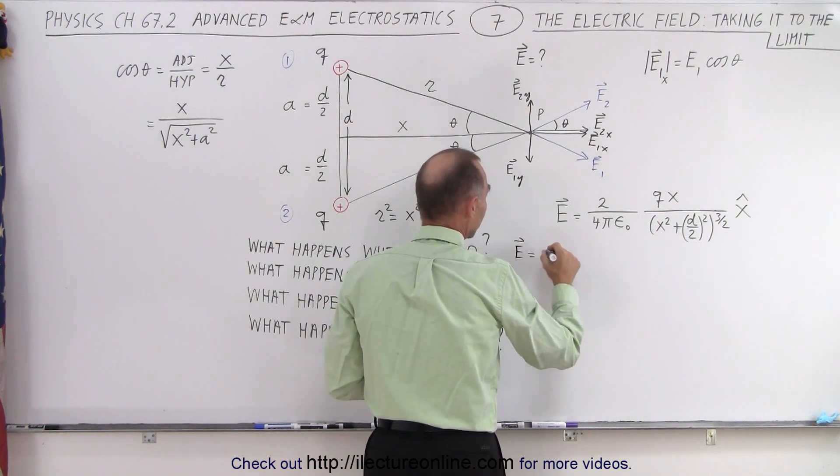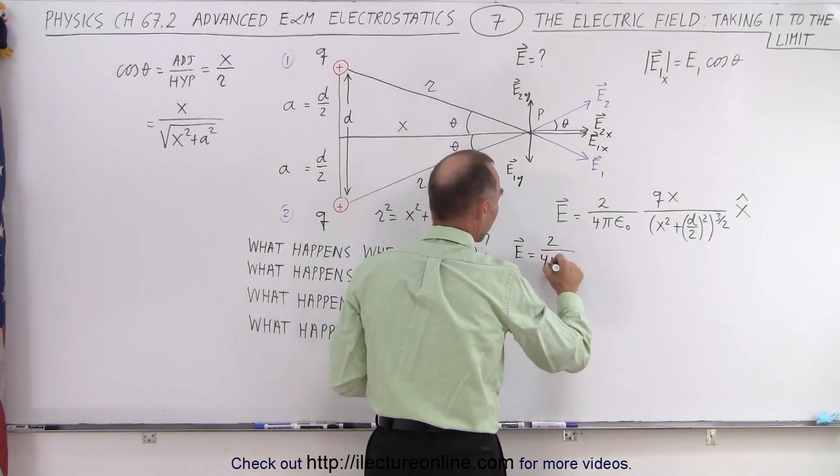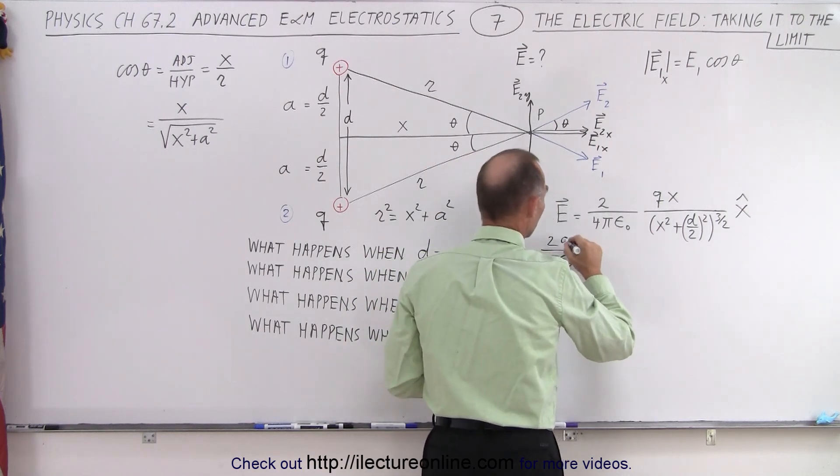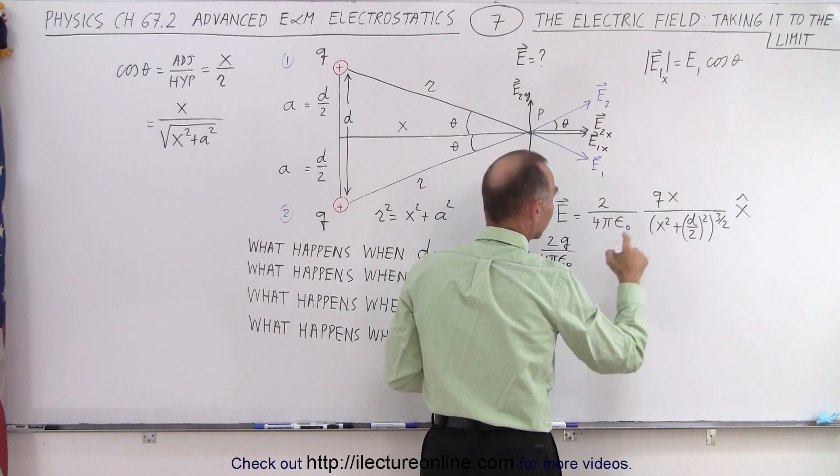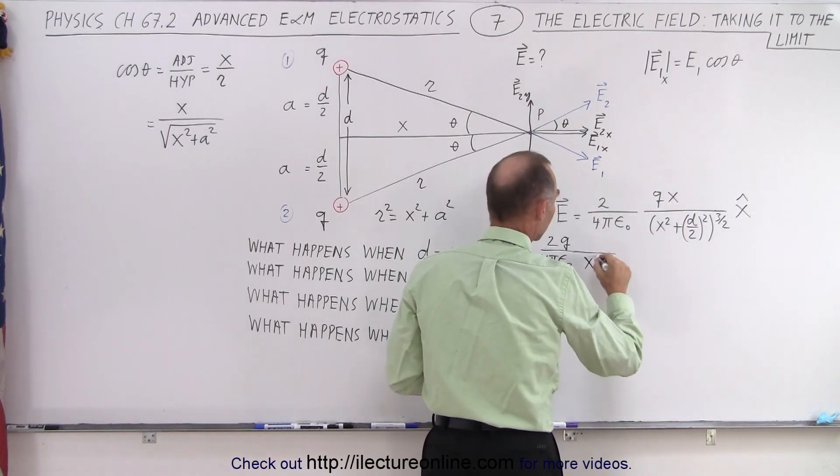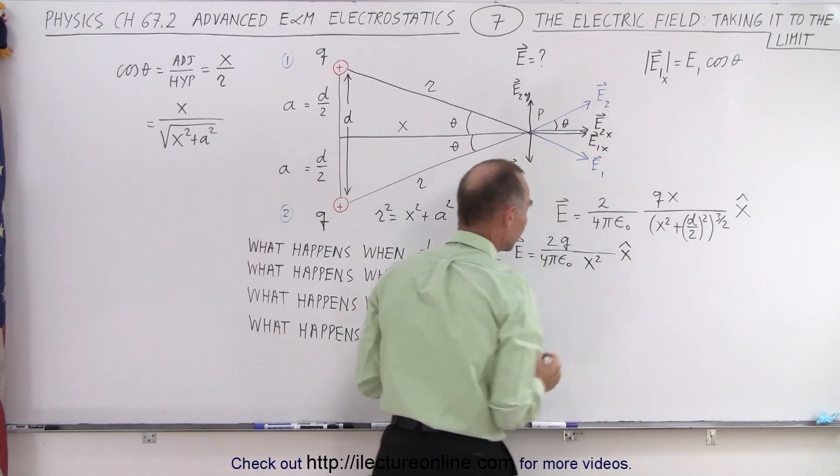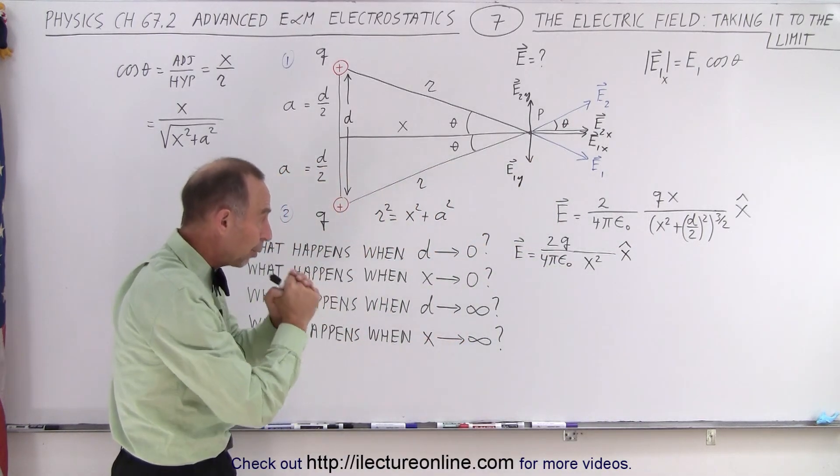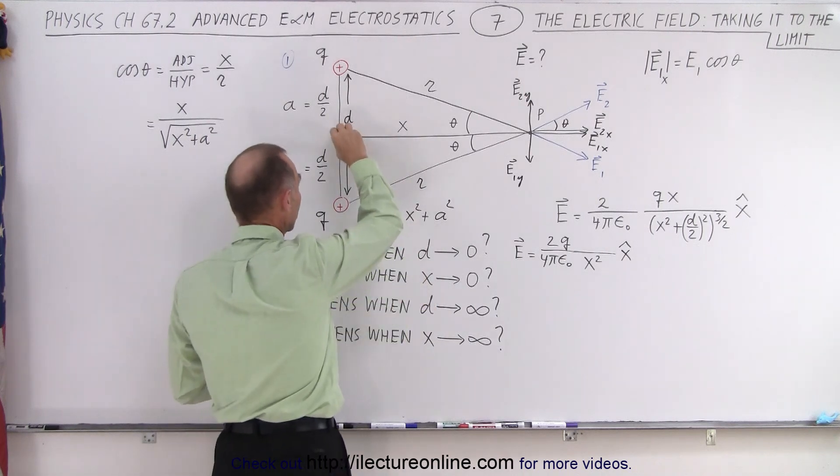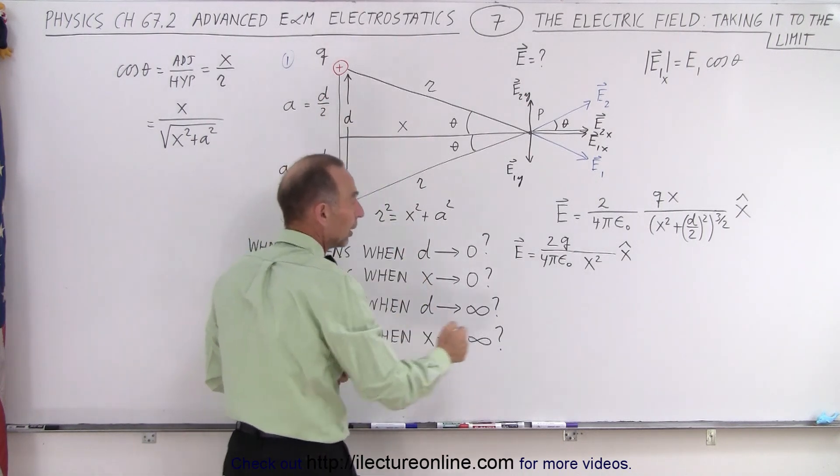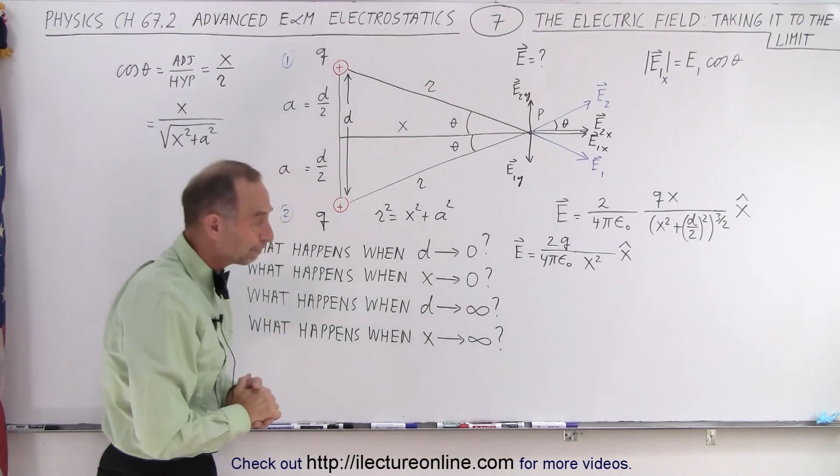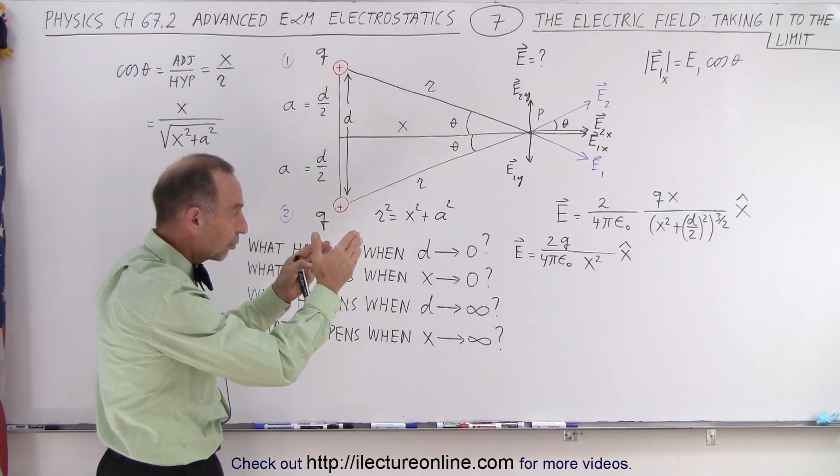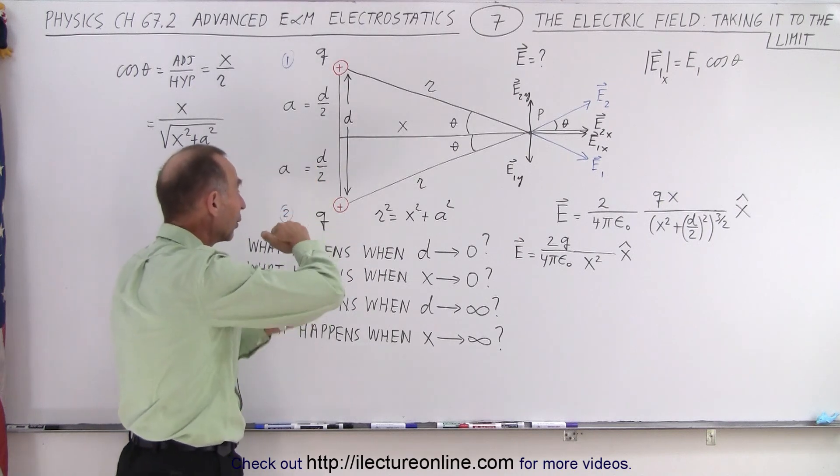So we have an x in the numerator and an x³ in the denominator. So the x cancels out one of the x's in the denominator. And we end up with the electric field equal to 2/(4πε₀) times q over x² in the x direction. And so that is the very familiar equation for the electric field of a point charge. Now in this case the point charge will be 2q instead of 1q. So you can see that the equation boils down to the correct equation when we let d go to 0.